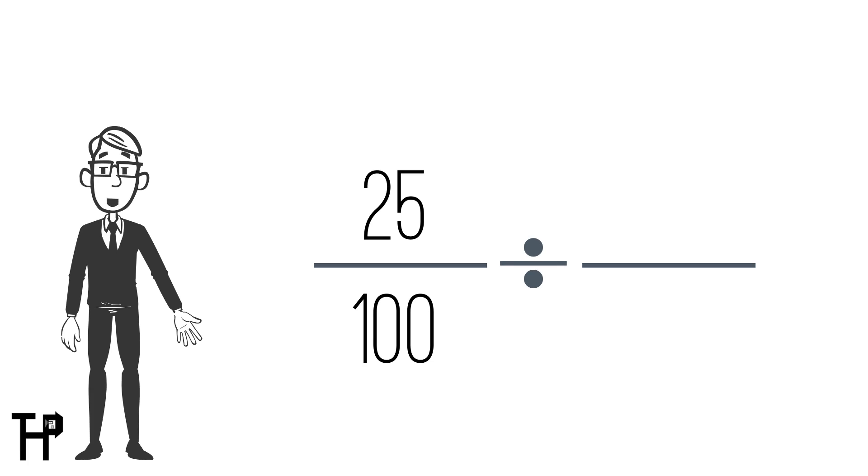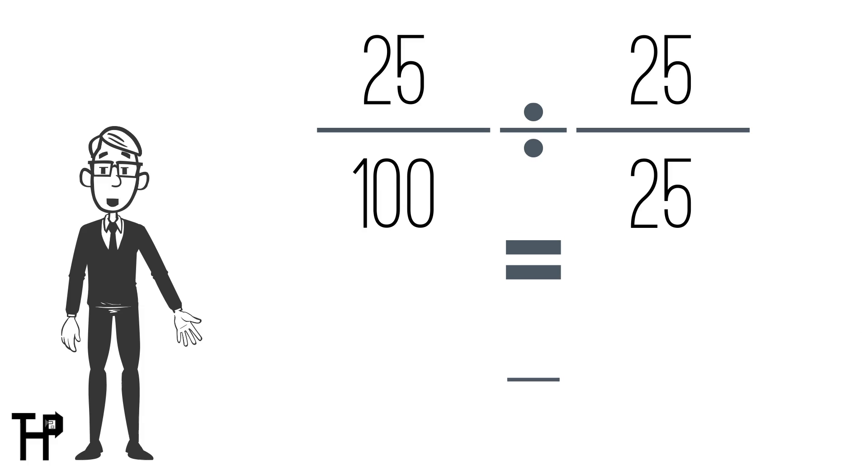In order to reduce this fraction, we take each number and divide it by the top number, like so. 25 divided by 25 is 1, and 100 divided by 25 is 4, thus making this 1 over 4, or one-fourth.